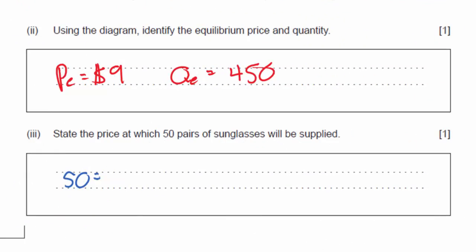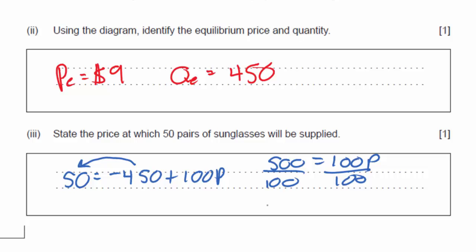So we can say 50 equals negative 450 plus 100P. I can move my 450 over here. So 50 plus 450 is 500 equals 100P. Divide both sides by 100. 500 divided by 100 gives me a price of $5.00. It's always a good idea to prove using the equations your answers rather than just estimating them from the graph.